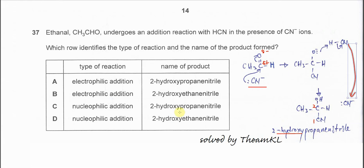Okay, so therefore the answer is quite clear. Because cyanide is a nucleophile, this addition we call nucleophilic addition. So it's C or D. And the product name already told you is 2-hydroxy propane nitrate. All right. So the answer is C. Okay, that's all. Thank you.